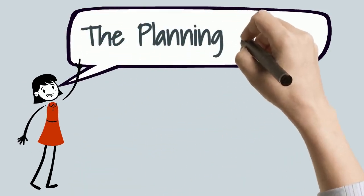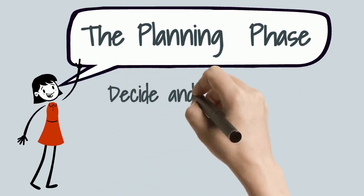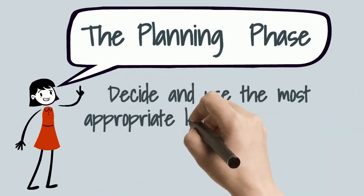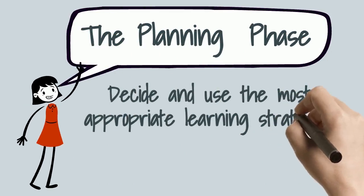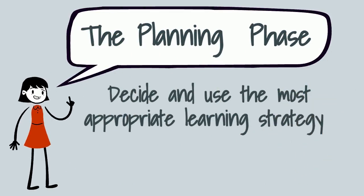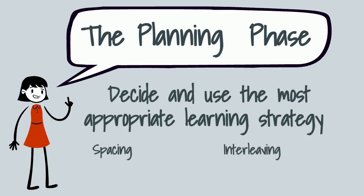In order to complete the planning phase, Jen learned she needed to choose an appropriate learning strategy. Through her research, Jen had learned that there were a huge variety of learning strategies to choose from, and that she needed to be discerning — she needed to pick the strategy that suited the task, not her.